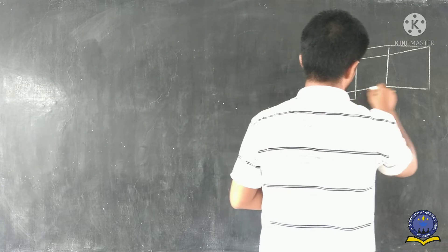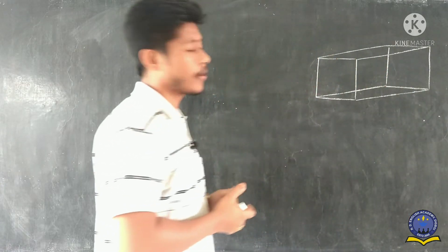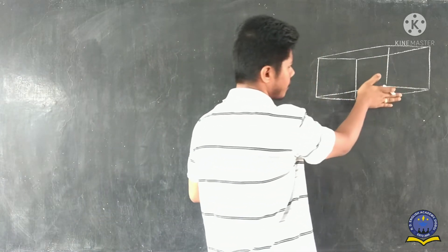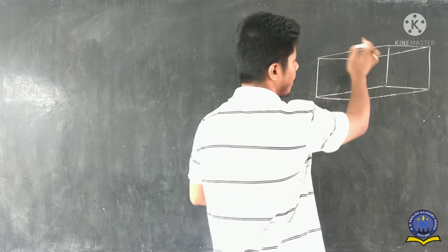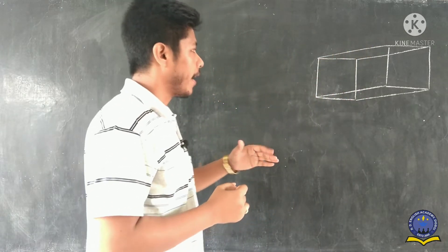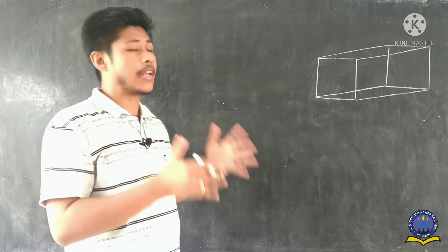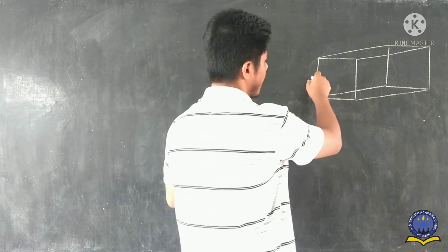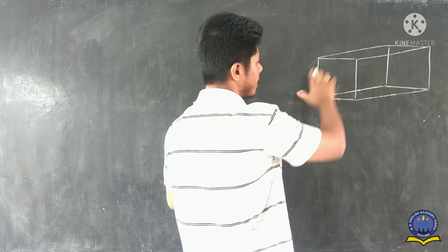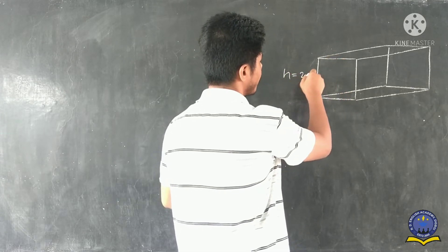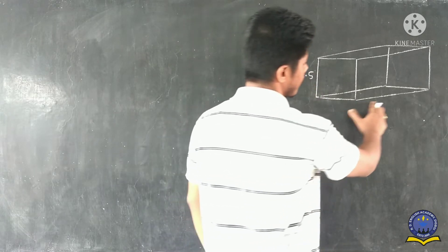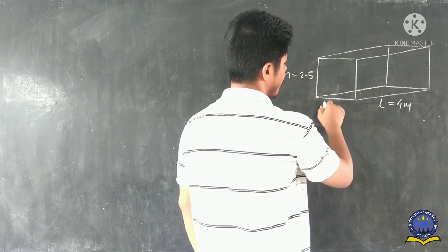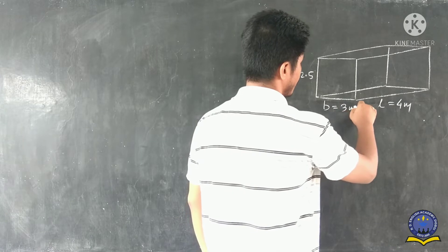In this box, there are four walls — one, two, three, and the back side is the fourth — and the top part as well. This box is the shelter made up of tarpaulin. The height is given as 2.5 meters, the length is 4 meters, and the breadth is 3 meters.